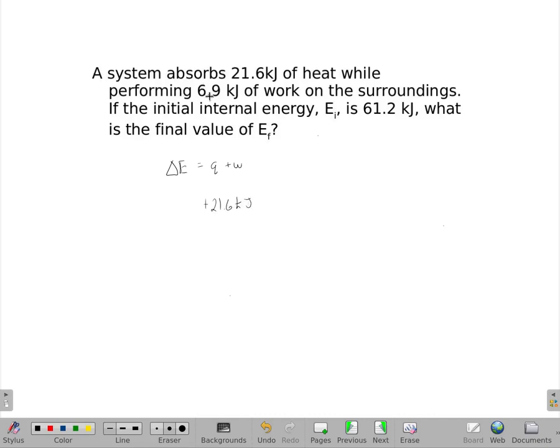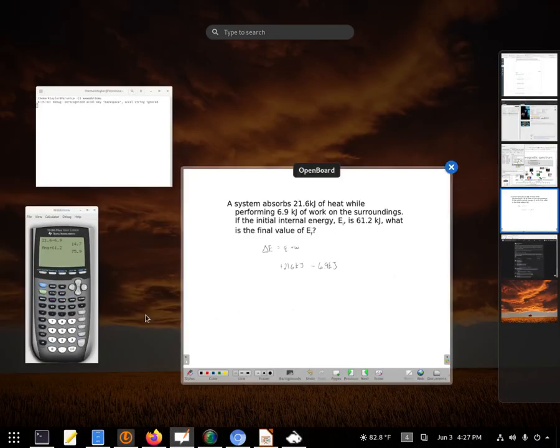And performing 6.9 kilojoules of work tells us it's losing that energy, because it's doing all the work, it performs it. So, my delta E is just those two numbers.